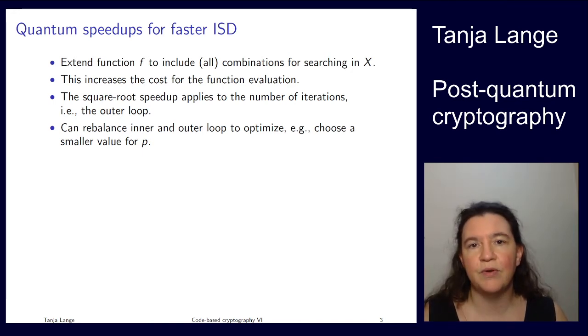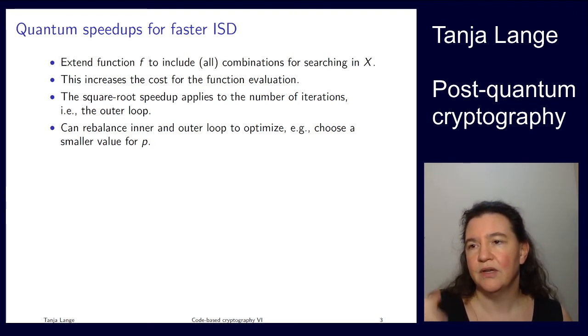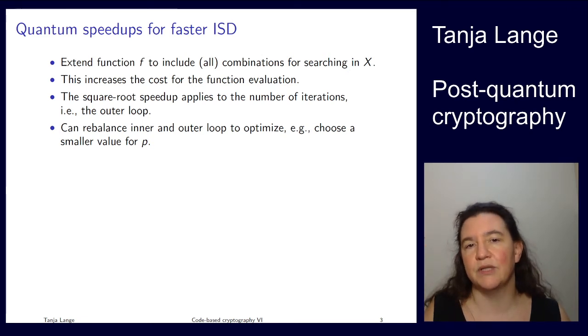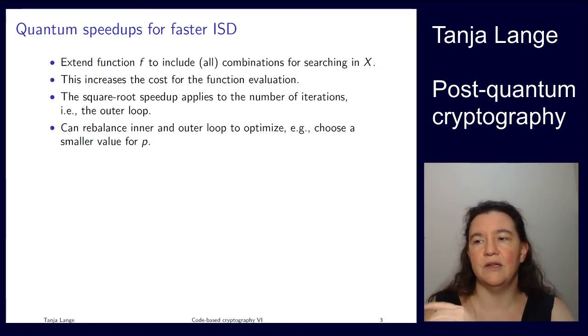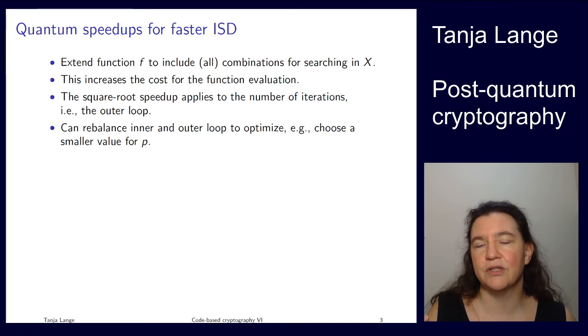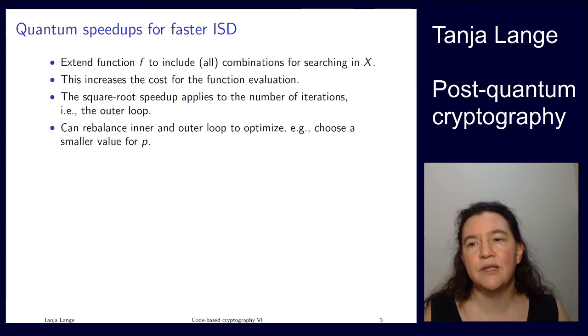Or we can say we only searched through some of those, but this would be all part of this computation of f. And then all of those get checked. And if any of them has the right weight, namely in this case t minus p, then we have found this thing. And so that is the one with the amplitude that we want to amplify and the other ones we want to decrease. Now the square root speedup that we are getting with Grover applies to the outer loop, not to the selecting all the combinations of p columns in x, but to the number of iterations.